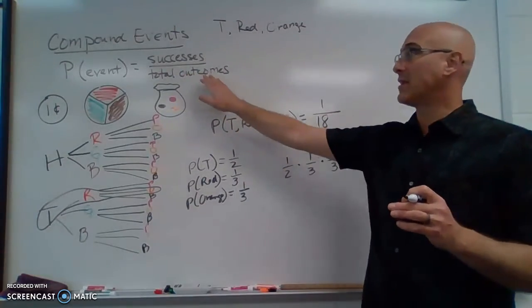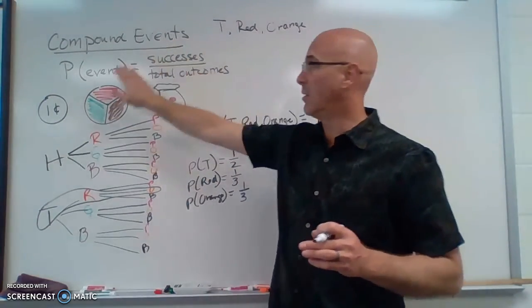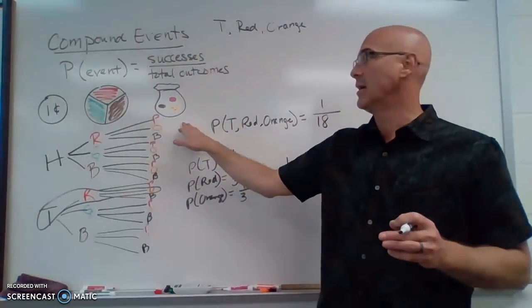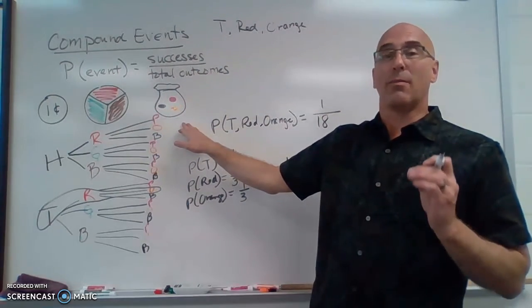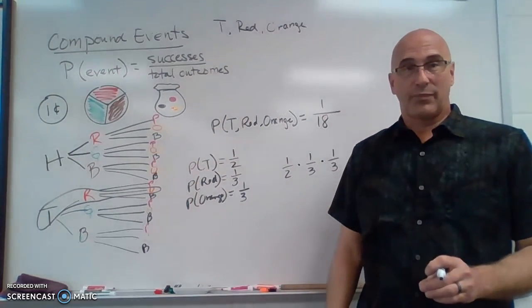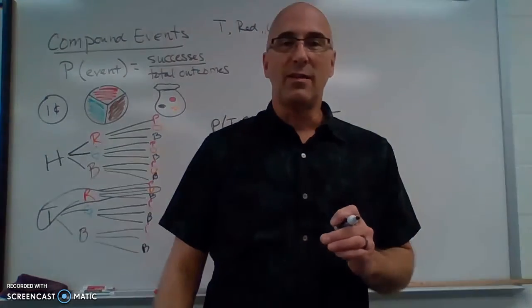So to find the probability of a compound event, multiple things happening, we take the individual probabilities and multiply them together. And that is a compound event.